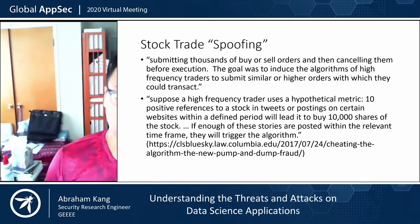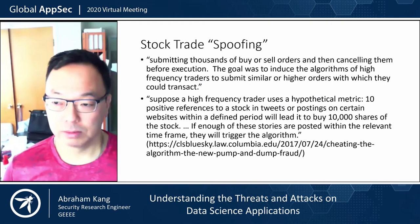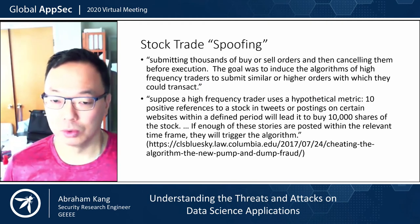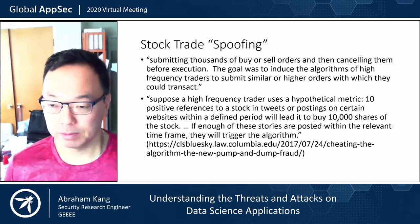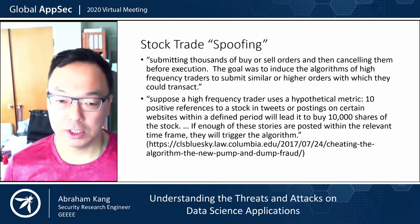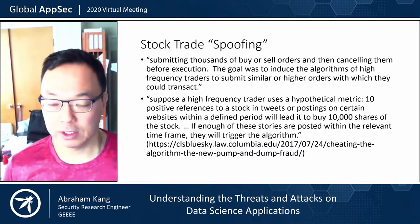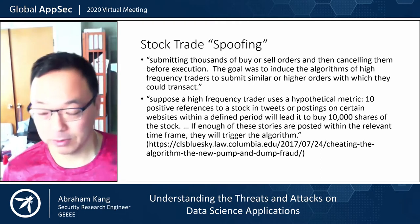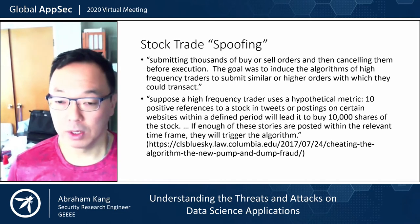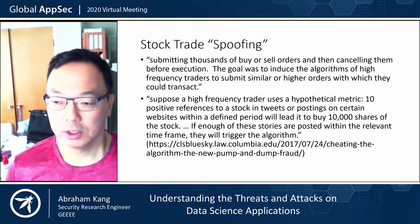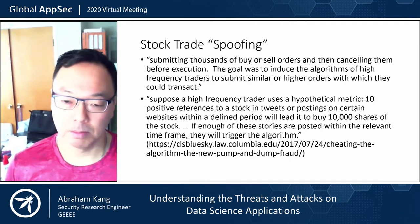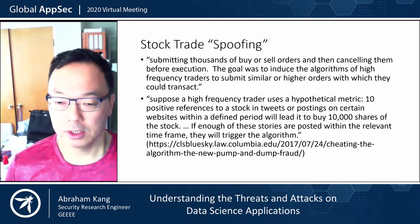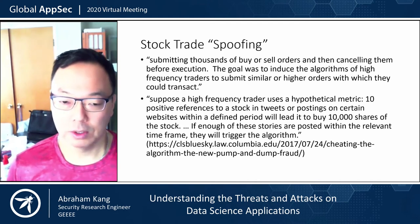Another stock trading algorithm was trying to look at tweets or postings on different financial websites within a defined period. If they did sentiment analysis — identifying the stock name, whether the posting was positive or negative, and if there were a lot of them in a short period of time — it would trigger the buying or selling of stock by these automated algorithms. There were actually people manufacturing these stories and tweets with bots, and that would trigger the algorithm.